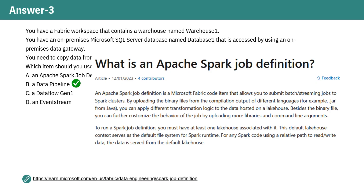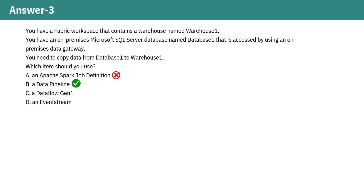Option C: A Data flow Gen 1. Data flow Gen 1 was primarily used for data preparation and transformation within Power BI, but it is neither designed for direct data transfers to a Fabric warehouse nor a recommended approach. Moreover, it has been deprecated, making it an incorrect choice.